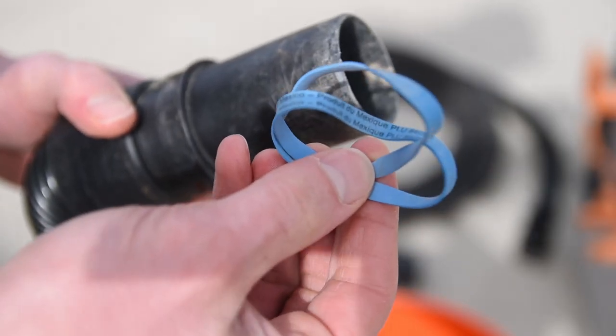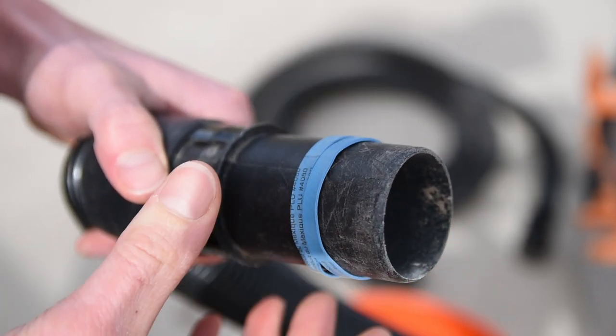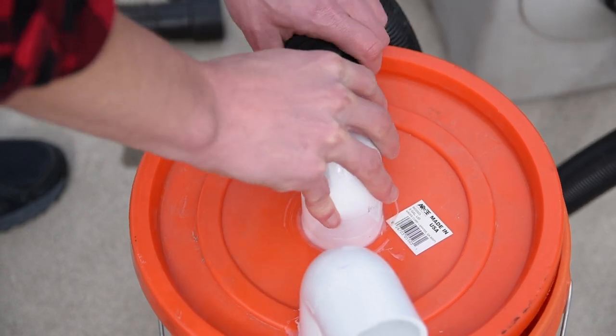Now the shop vac hoses won't fit perfectly with a 1.5 inch PVC, but you can seal it up with a couple of rubber bands or a bit from an old bike tube. The hose that connects to the shop vac will connect to the center pipe.